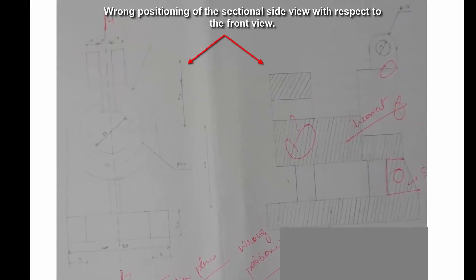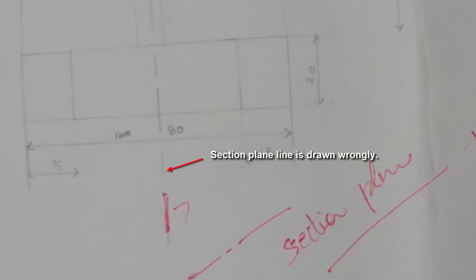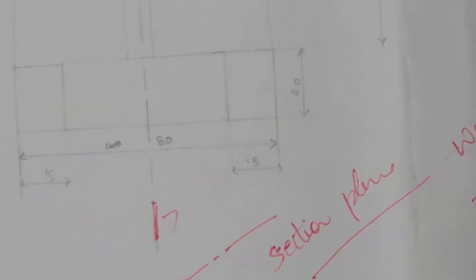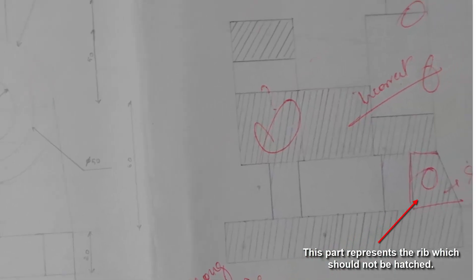Wrong positioning of the sectional side view with respect to the front view. Sectioned plain line is drawn wrongly. This part represents the rib which should not be hatched.